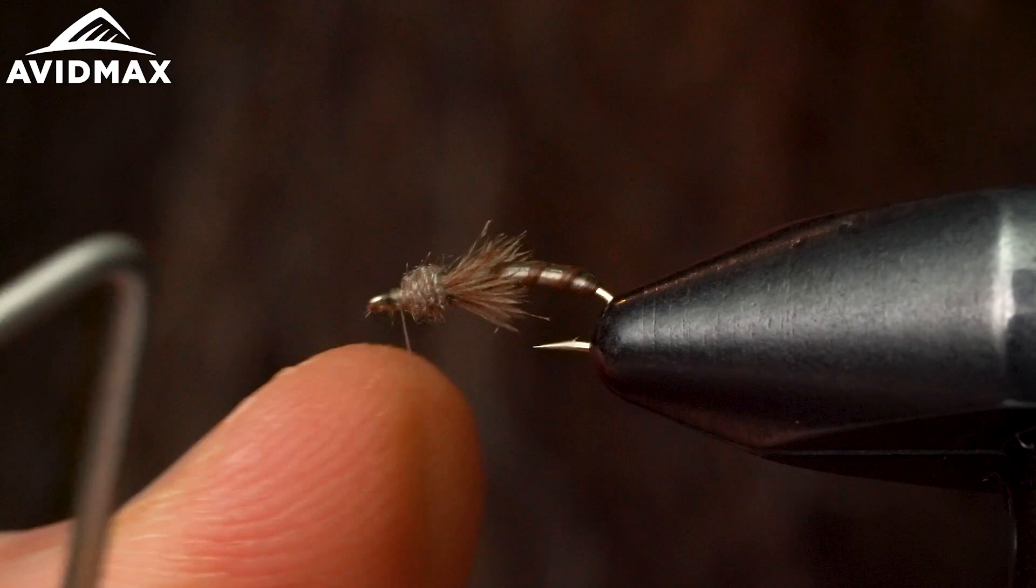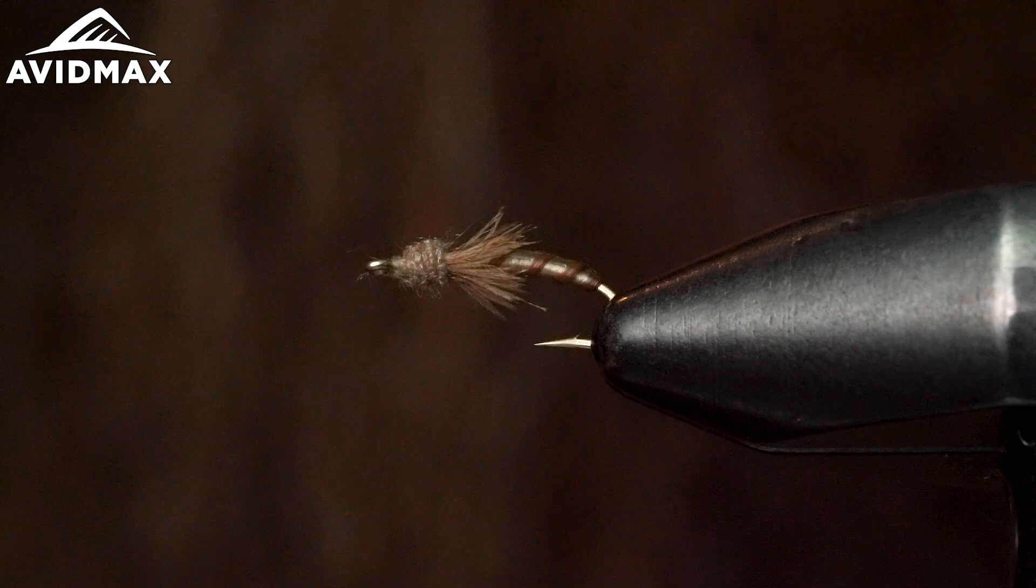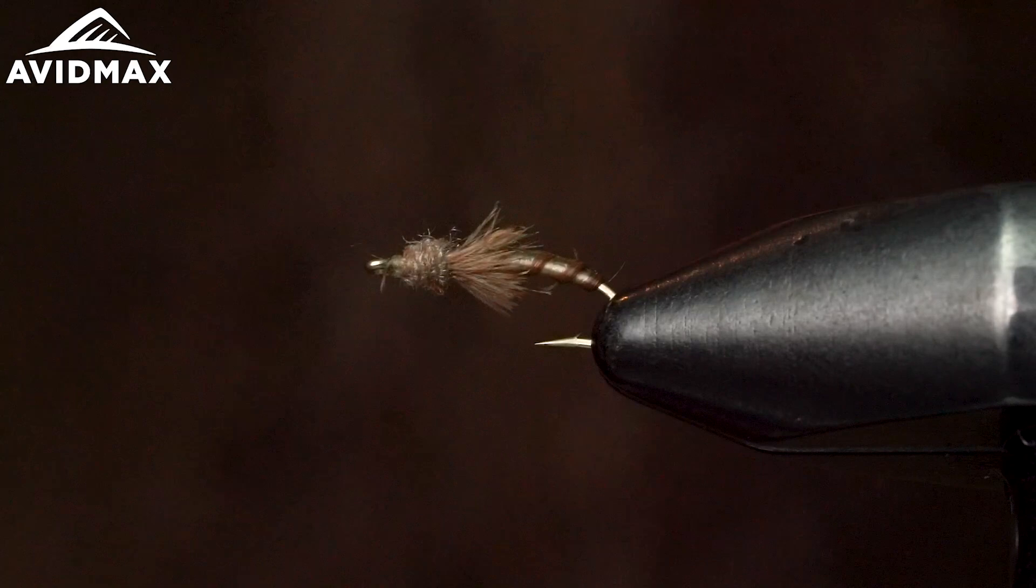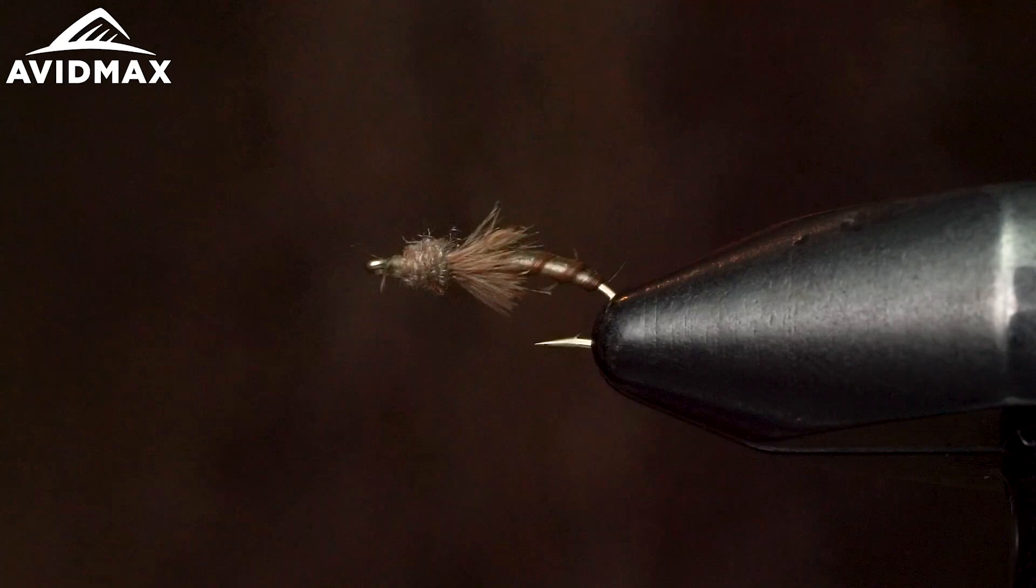Snip out my thread. Make sure my gills are kind of spread around. And there you have it. Abs pupa. Dirty little tailwater pattern.